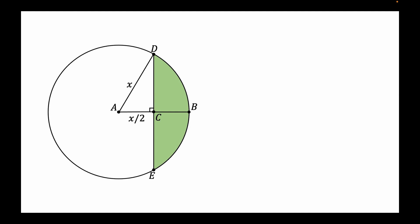The triangle ADC is half of the area of the triangle ADE. And as you can see we already have two sides of this triangle. The hypotenuse is the radius which is X and the base is the radius divided by 2, X divided by 2.